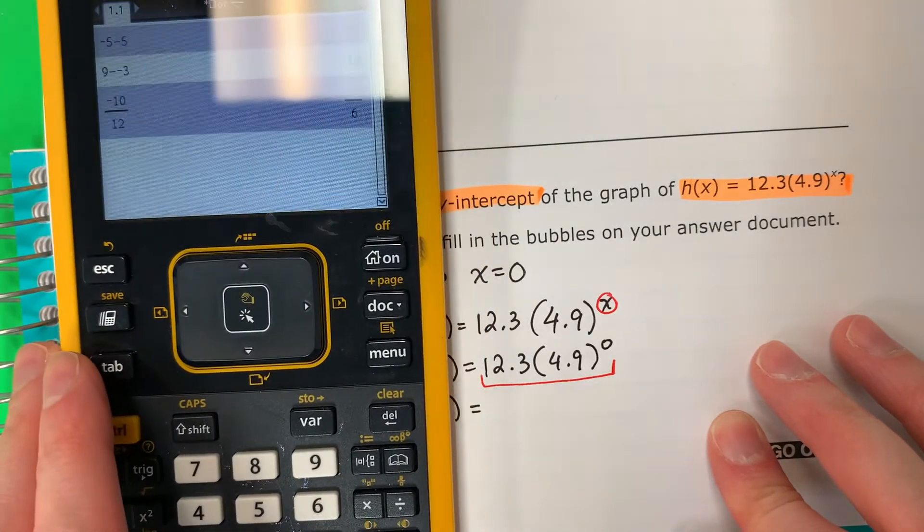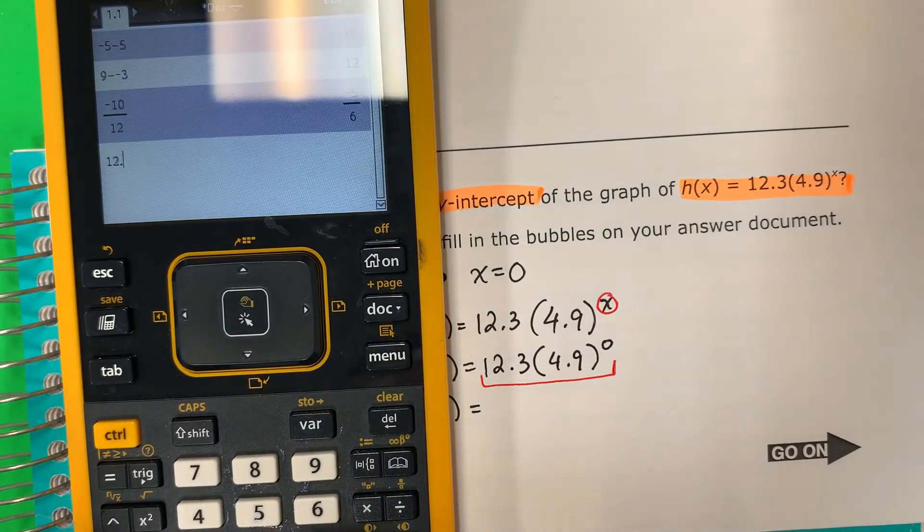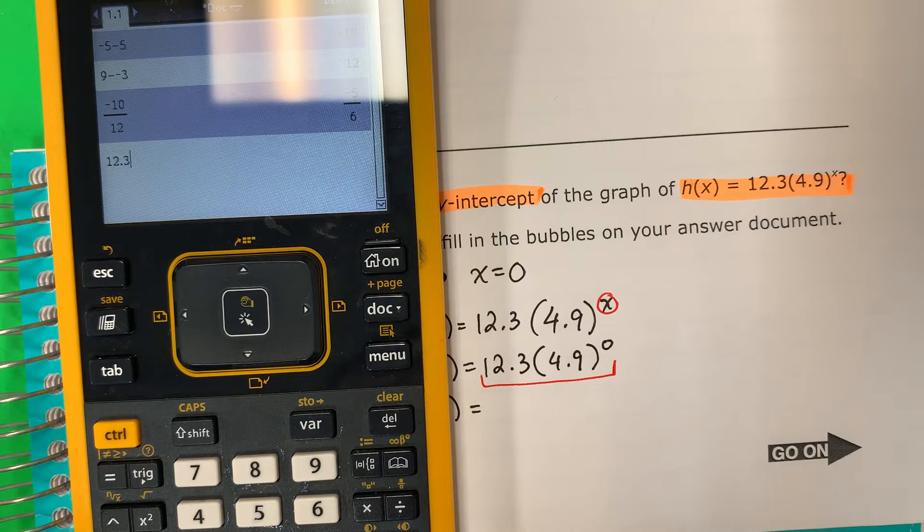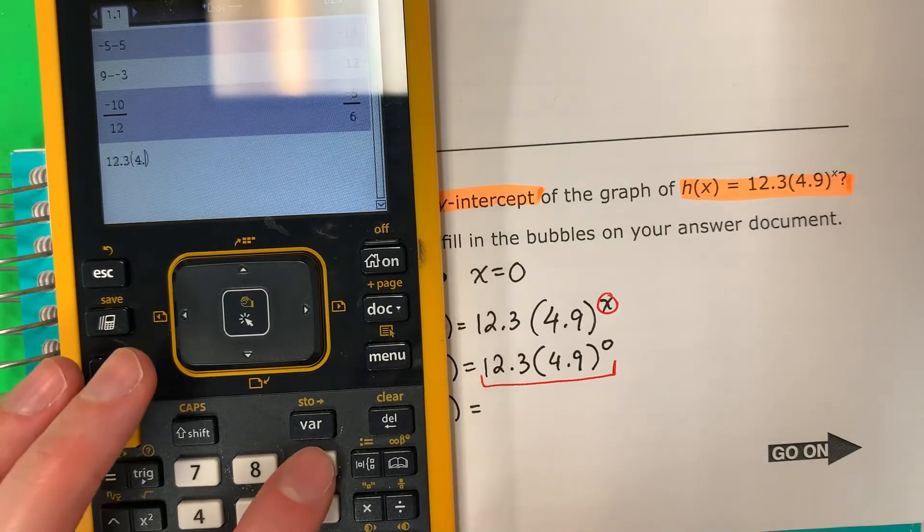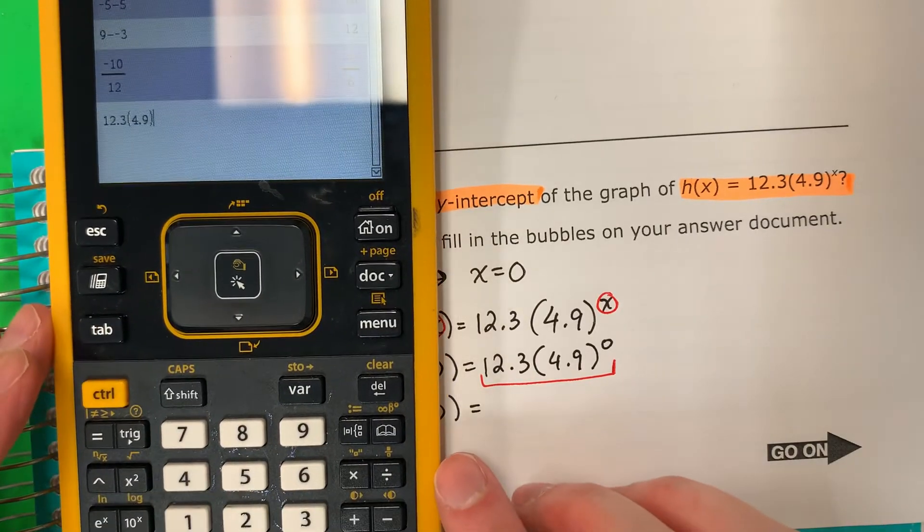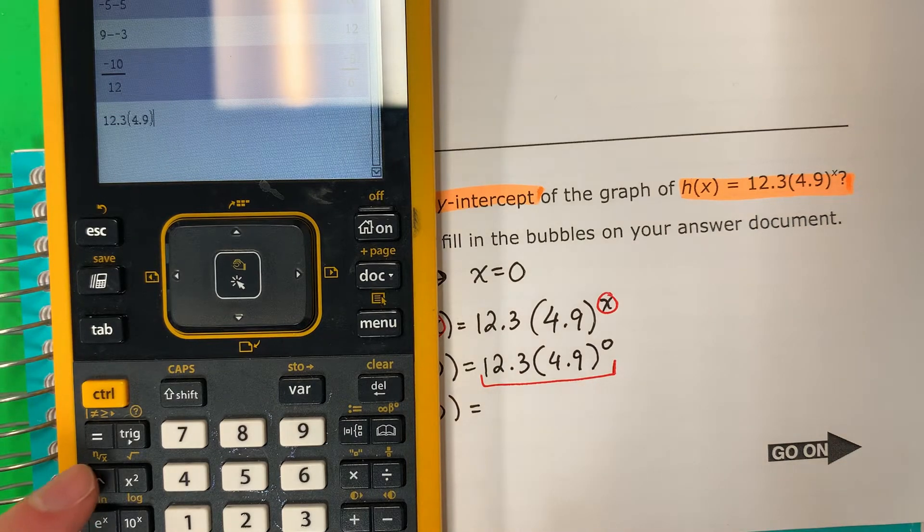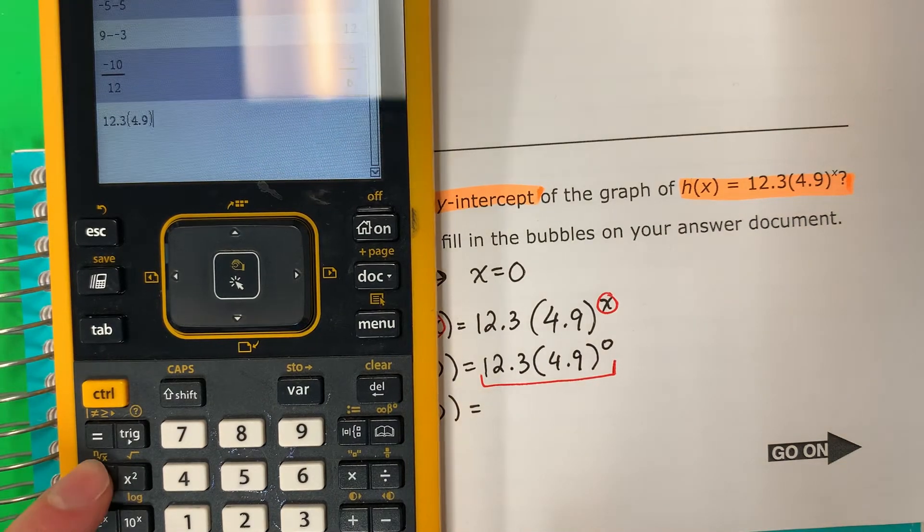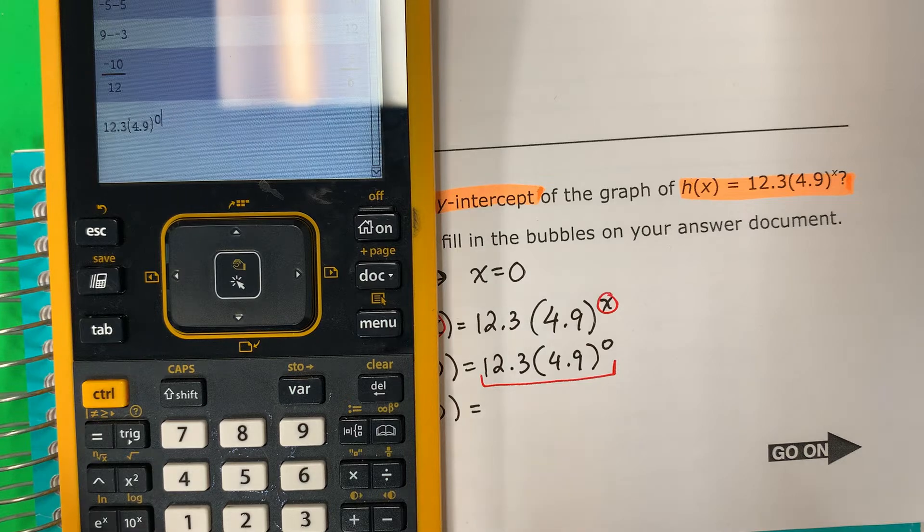So let's go ahead and do that. So it's going to be 12.3, parenthesis, 4.9, parenthesis. Now the exponent, this is what you need to put for the exponent. This little triangle, 0, enter.